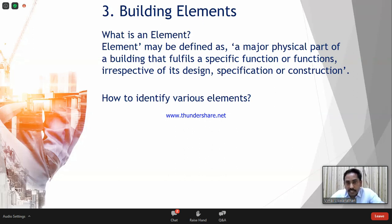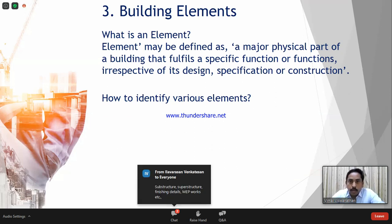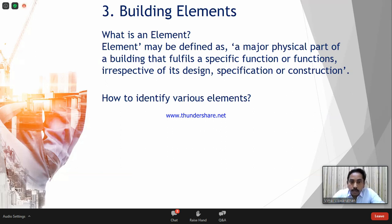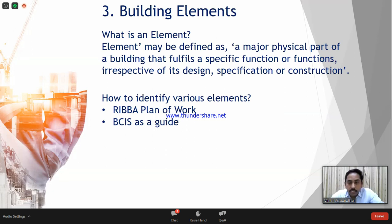How do we identify various elements? A building has numerous parts, so how do we bifurcate them? We need to adopt some guides. One is the RIBA plan of work, which provides guidance on how to identify elements. The second and most important one is BCIS, which has provided a guide giving an elemental and sub-elemental breakdown of a building, defining each and every element. If you go into the BCIS cost plan format, they have explained all these things. For further research, I suggest you refer to the BCIS document.